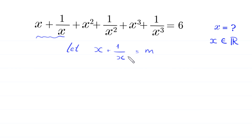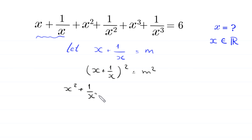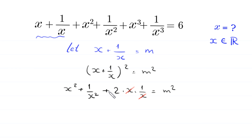If we take the square of both sides of this equation, then x plus 1 over x, whole squared, equals m squared. Expanding: x squared plus 1 over x squared plus 2 times x times 1 over x equals m squared. The x terms cancel, and moving the 2 to the right hand side gives x squared plus 1 over x squared is equal to m squared minus 2.